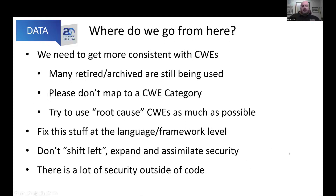Looking at where we go from here: we need to get more consistent with CWEs. We have retired and archived CWEs that were still being used — just don't map to them. Try to use root cause CWEs as much as possible. One of the main things we're hoping to do within the Top 10 is fix issues at the language and framework level. CSRF was added to the Top 10 in 2007 when almost every single web app was susceptible. Now in 2021, we're looking at single-digit percentage susceptibility — a tiny fraction of web apps are still susceptible, especially with modern languages.